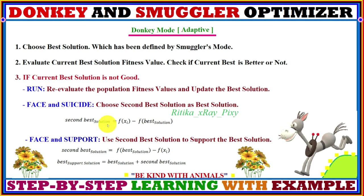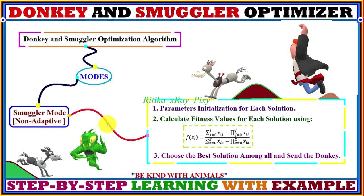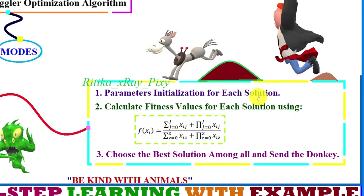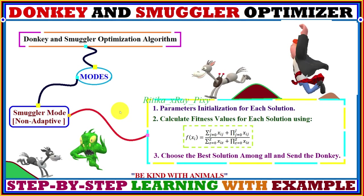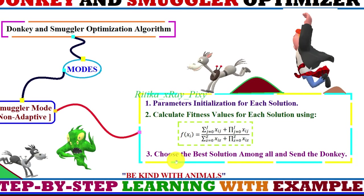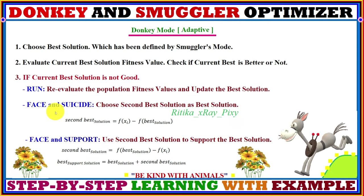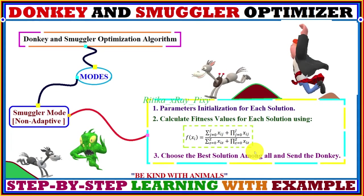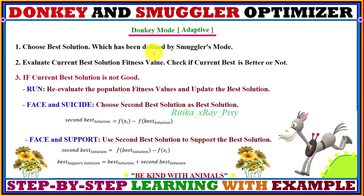This algorithm has two modes to find the optimal solution: smuggler mode and donkey mode. In the smuggler mode, we initialize the parameters, initialize each donkey's position in the search space, find the fitness value for each donkey, find the best solution among all, and send the donkey. In the donkey mode, the best solution defined in the smuggler mode is chosen and its fitness value is reevaluated.